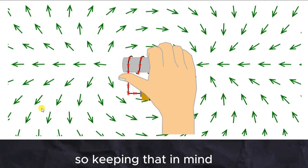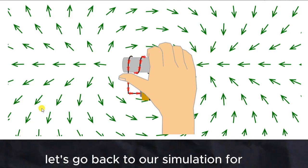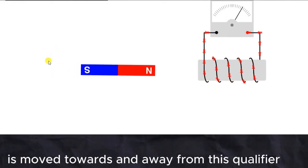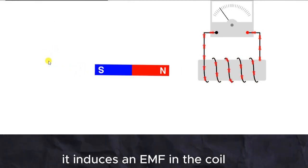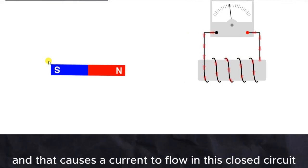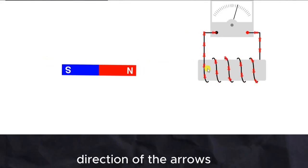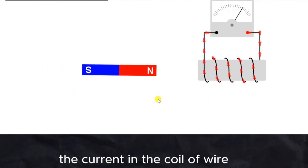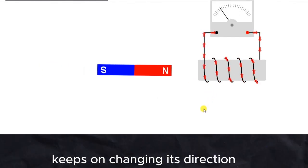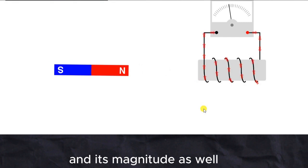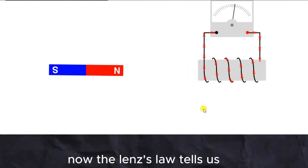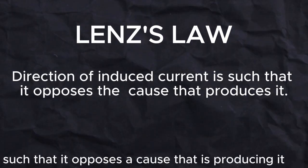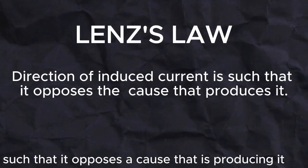Keeping that in mind, let's go back to our simulation for Faraday's Law. If this magnet is moved towards and away from this coil of wire, it induces an EMF in the coil and causes a current to flow in this closed circuit. We can see the direction of the arrows — as the magnet moves towards and away from the coil, the current in the coil keeps on changing its direction and magnitude. Lenz's Law tells us that this induced current should have a direction such that it opposes the cause that is producing it.